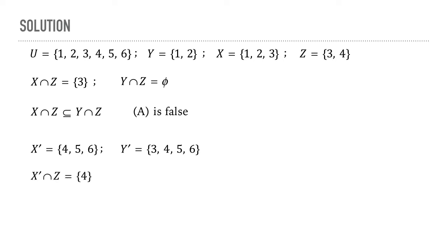So, the intersection of X complement and Z would be the set containing only the number 4. Now, consider this statement. Is the left-hand side a superset of the right-hand side? The answer is no. And therefore, option D is also false.